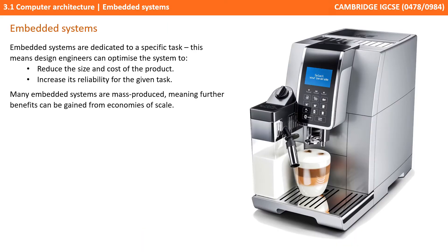Since embedded systems are dedicated to a specific task, design engineers can optimise them to reduce the size and cost of the product, and increase the reliability and performance. Some embedded systems, such as this coffee machine here, are mass-produced, further benefitting from economies of scale.